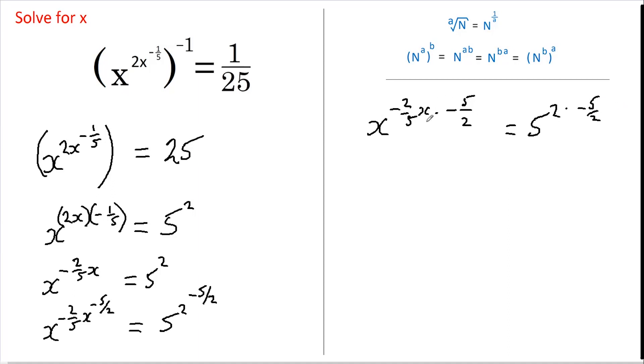So that simplifies this side because this now becomes x, and the twos cancel, the fives cancel, and the negative signs cancel. So this is just x to the power of x equals, now I'm going to write this as 5 squared to the power of a half to the power of minus 5.